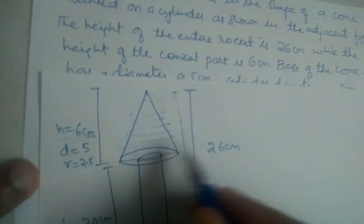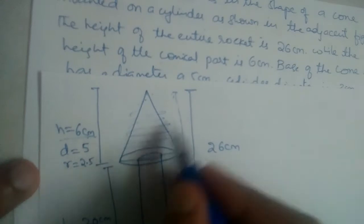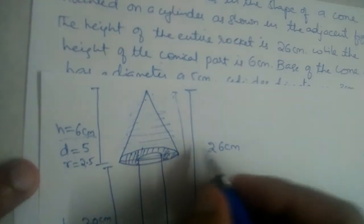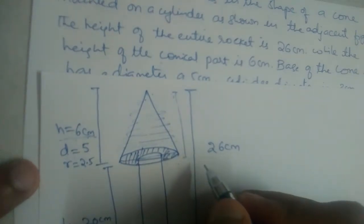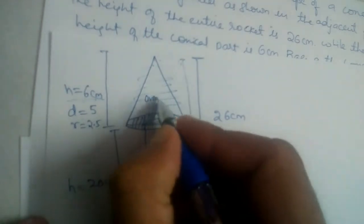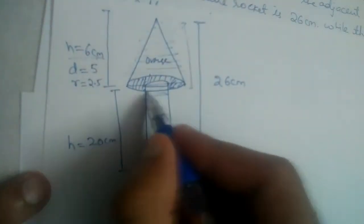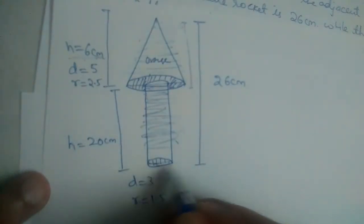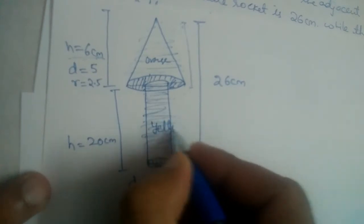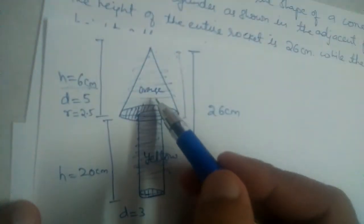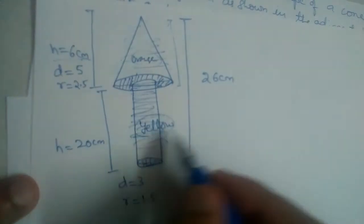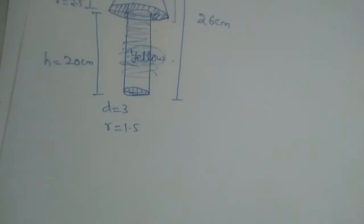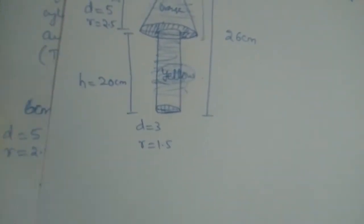The orange part includes the curved surface area of the cone plus the ring at the base. The cylindrical portion — the curved surface and one base circle — will be painted yellow. We need to find how much area is painted orange and how much is painted yellow.